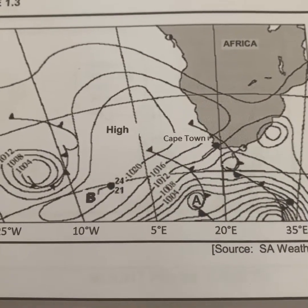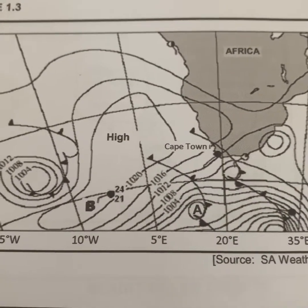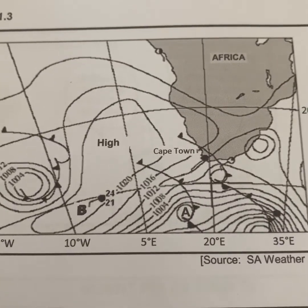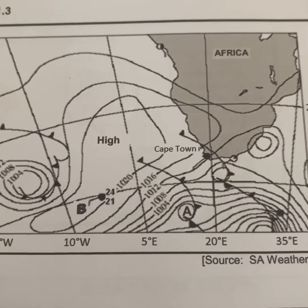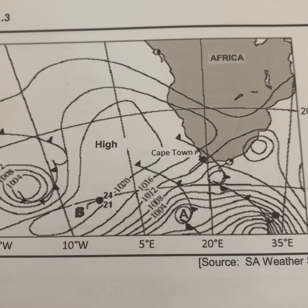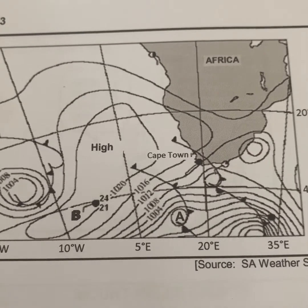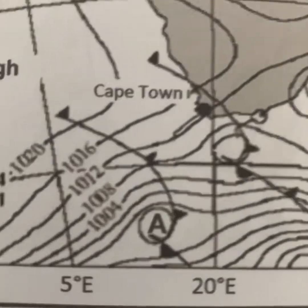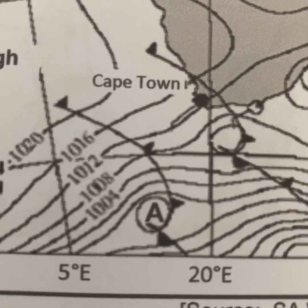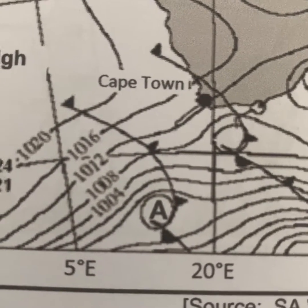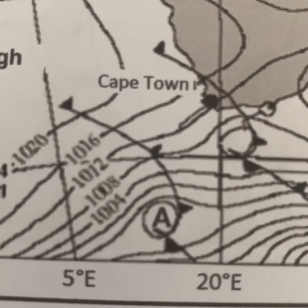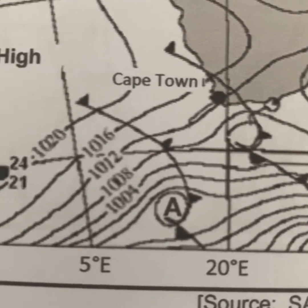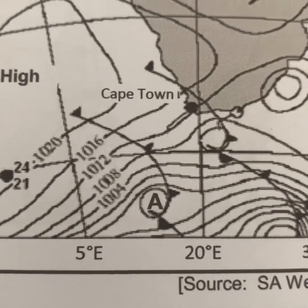The first question we're going to be doing is from an exemplar paper. The synoptic weather map question says: indicate whether pressure systems A and C are high or low pressure systems respectively. A would definitely be a low pressure system. The reason for that is because it is a mid-latitude cyclone, and a mid-latitude cyclone is a low pressure system.